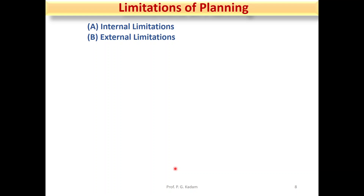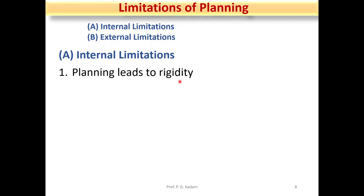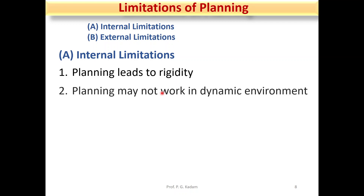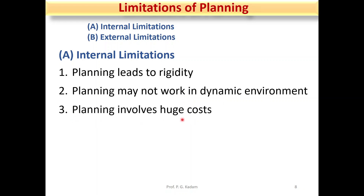Now let us look at the limitations of planning — internal limitations and external limitations. In internal limitations: first, planning leads to rigidity — rules, regulations, or overthinking can disturb the planning. Second, planning may not work in a dynamic environment. Third, planning involves huge cost.